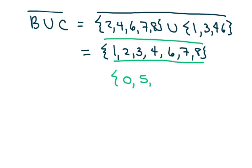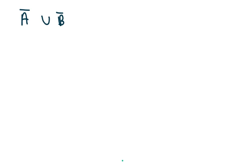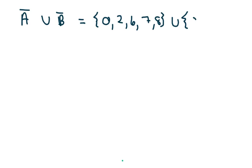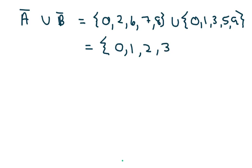Now here's a different one: we have the complement of A united with the complement of B. What's not in A is {0, 2, 6, 7, 8}, and what's not in B is {0, 1, 3, 5, 9}. Union means either, or, or both, so it's just everything combined — don't write things down twice. It looks better to write it in order, though you don't have to.